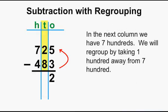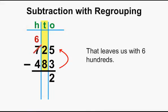In the next column, we have 7 hundreds. We will regroup by taking 100 away from 700, which leaves us with 6 hundreds.